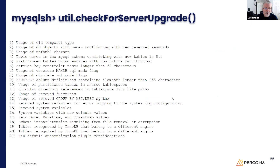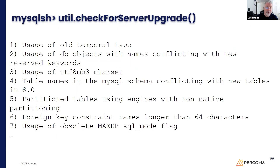It does 21 checks — and I know this is hard to read, we'll go into more details. The checks include making sure that things have been upgraded, that old temporal data types where you didn't have microseconds need to be updated, how different objects are used, and if you're using the old UTF-MB3 character set — everything is now optimized for MB4. There will be more details in follow-on videos. The last one there is maxdb — that's the old SAP project that MySQL had many years ago, back around 2006 or 2007.